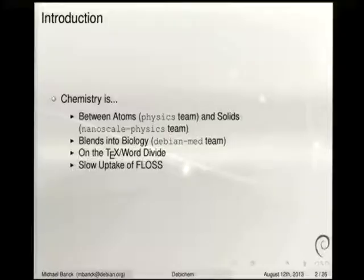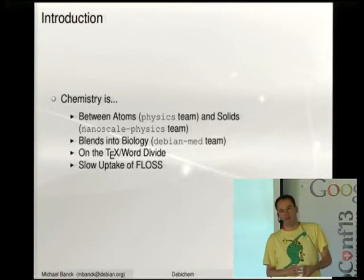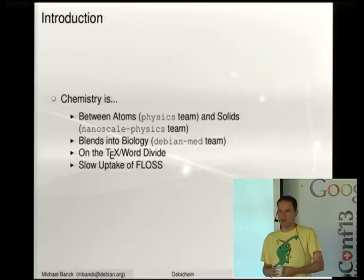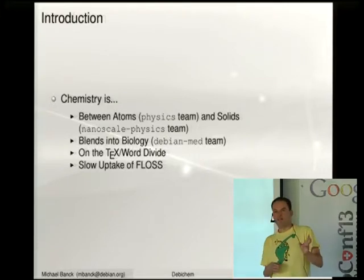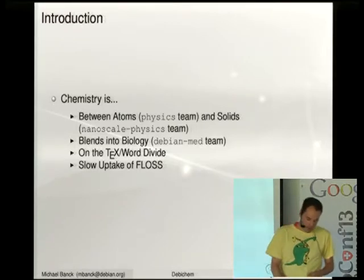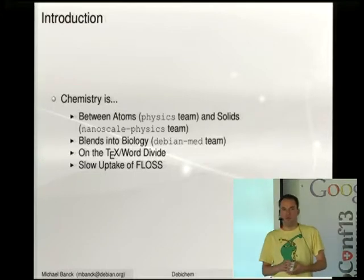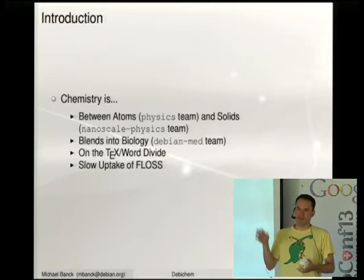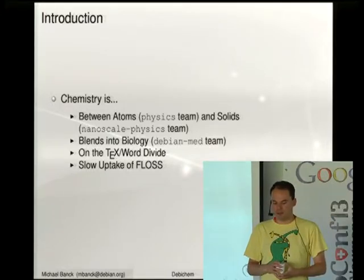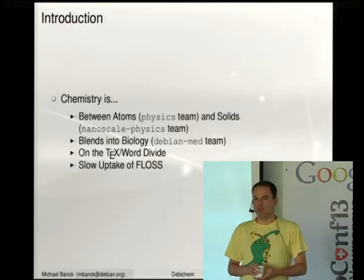Generally, what is chemistry? We're here at DevConf, so we are between the atoms — that's physics, that's the physics team — and solids, that's nanoscale physics, which is another team. Chemistry is between very small atoms and when it gets really large in terms of solids, metals, or semiconductors — all the molecules in between, that's chemistry. From a more scientific point of view, chemistry is when the electrons in atoms interact with electrons in other atoms or molecules, and bonds are broken or changed. That's where chemistry is.